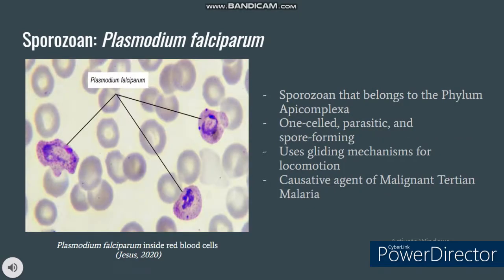The last representative organism of protozoa is Plasmodium falciparum. Plasmodium falciparum is a sporozoan that belongs to the phylum Apicomplexa. It is characterized by being one-celled, parasitic, and spore-forming. Additionally, Plasmodium falciparum are elongated and crescent-shaped, by which they are sometimes identified. In terms of movement, Plasmodium falciparum does not have flagella, cilia, or pseudopodia; rather, their primary mode of locomotion is through gliding mechanisms using small static myosin motors. Plasmodium falciparum is a protozoan parasite of humans and the causative agent of malignant tertian malaria, also known as tropical malaria, which is the most severe form of malaria.